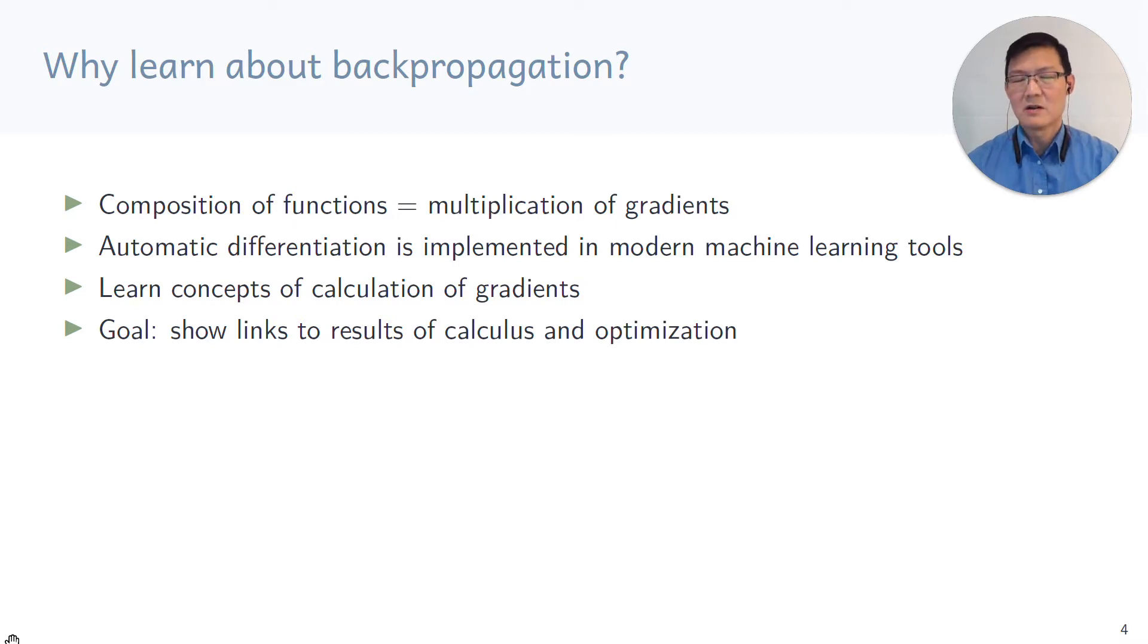This caching of intermediate results can be seen as backpropagation. The key idea here is that compositions of functions turns out to be the same as multiplying the gradients. Backpropagation is a special case of something called automatic differentiation. These concepts are a very useful way to link different results in calculus and optimization.